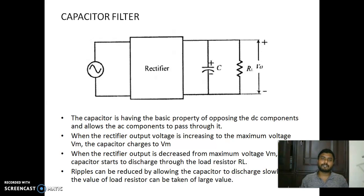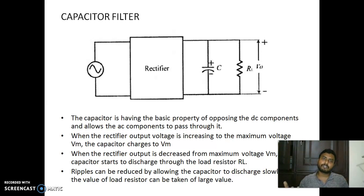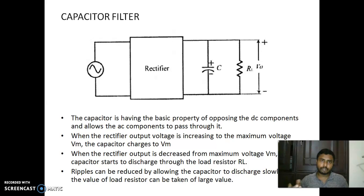The word 'filter' itself shows we are filtering out something — we are taking something and we are avoiding something. We are choosing something from a group of items and omitting something else. The circuit which does the same operation is known as a filter. You may study in detail about this filter in a higher semester; here we are just explaining what the filtering action is.